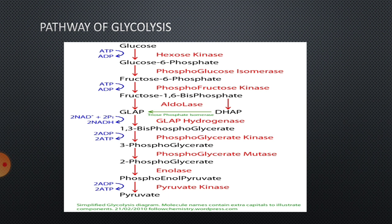Here, magnesium ions behave like cofactors in this reaction. The third reaction is also called phosphorylation reaction. Why is it called phosphorylation here? Because ATP is utilized. The phosphate ion from ATP is added to fructose-6-phosphate. The new phosphate ion is added to the first carbon of fructose, because it already has a phosphate ion at the sixth carbon and now the new one is added to the first carbon. So that it becomes fructose-1,6-biphosphate — two phosphate ions, one at the sixth carbon and another at the first carbon. It is done by the enzyme kinase.